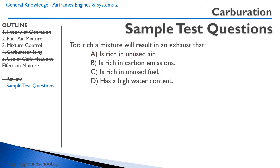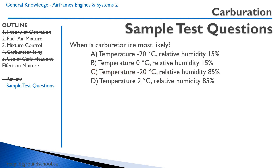Here's a chemistry question: too rich a mixture will result in exhaust that — too rich means more fuel than can be burned, so more fuel and less air. We'll have an excess amount of fuel on the reactant side of the chemical equation, so the exhaust will be rich in unused fuel. What temperature is carburetor ice most likely? Carburetor ice is most likely when temperatures are around freezing and the relative humidity is high — answer D. Answers with minus 20 won't produce carburetor icing because the air is too cold and all water vapor will already be frozen. Answer B is not correct because the relative humidity is too low — there's not enough water vapor to create icing.